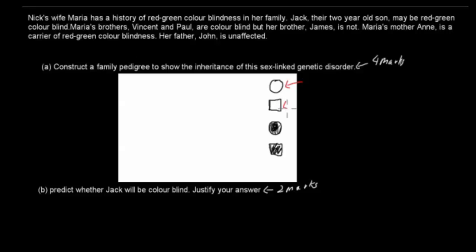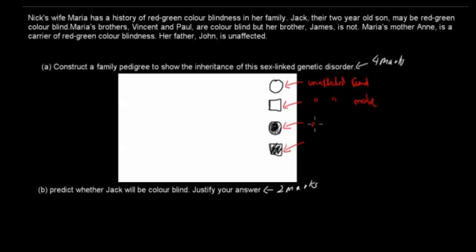You should give the marker an idea that you know these symbols mean different things. So this is unaffected female, this is unaffected male, this is affected female meaning that this person has colorblindness, and this would be affected male.